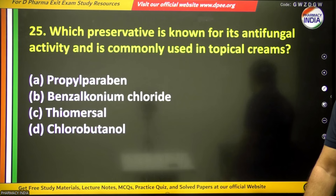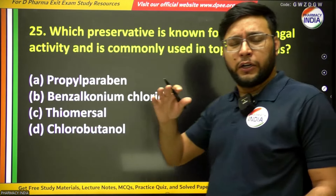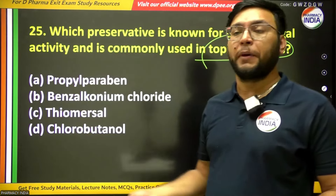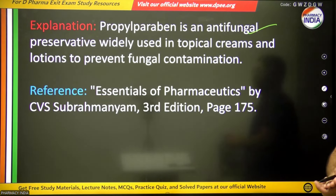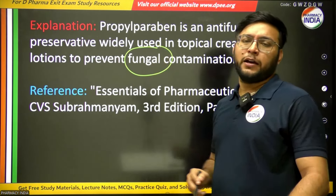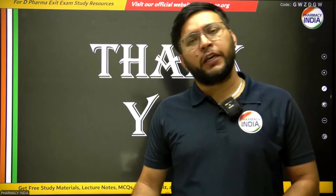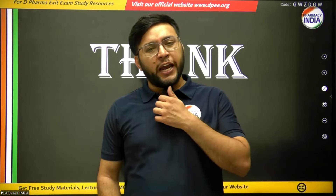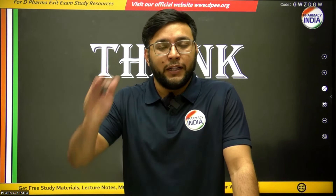The last question: which preservative is known for its antifungal activity and is commonly used in topical preparations? The answer is propylparaben — it is an antifungal preservative widely used in topical creams and lotions to prevent fungal contamination. We hope you liked the Pharmacy India team's initiative. We will continue this series of 25 mock papers for Telangana pharmacist with detailed explanations. Please share with your friends and college students. Thank you — we will meet again in the next video.